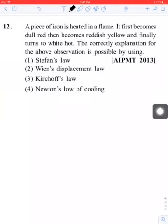If a piece of iron is heated in a flame, it first becomes dull red, then becomes reddish yellow, and finally turns to white.